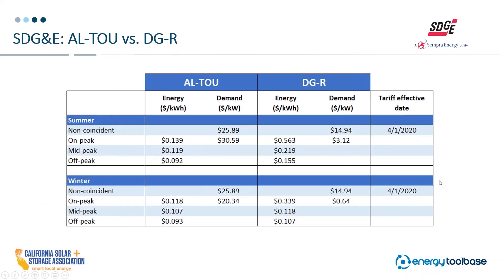Let's jump right in. I'm going to run through a summary of three different rate switches in each of the big three IOU territories, starting with SDG&E. This is the classic ALTOU to DGR rate switch, ALTOU being the default rate. What I want to highlight on the left-hand side of the screen is ALTOU has very, very high demand charges — we're talking $26 per KW non-coincident. And additionally, on top of that, over $30 per KW on peak in the summer.